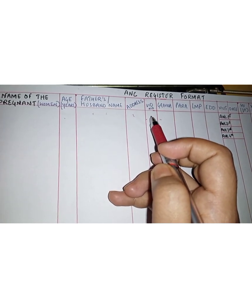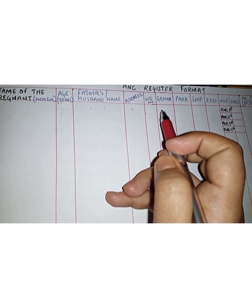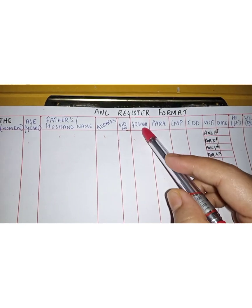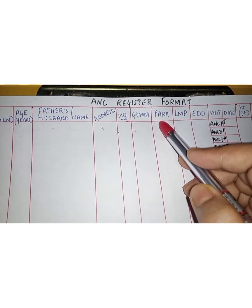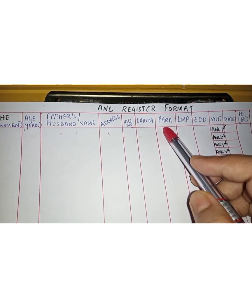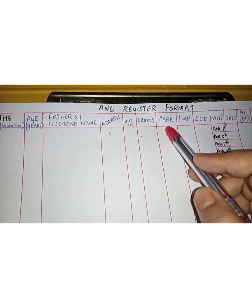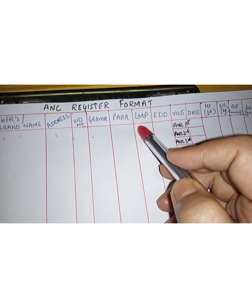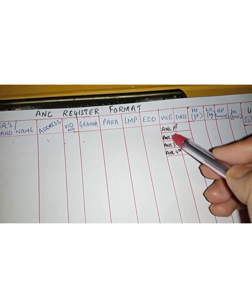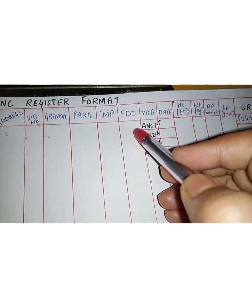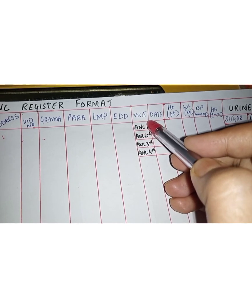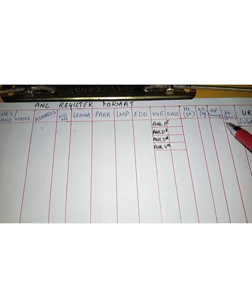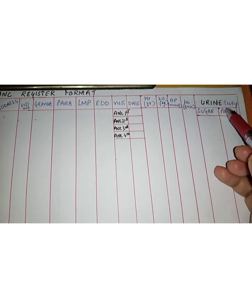We record the UID number, then gravida — which denotes the pregnant state, both present and past, irrespective of the period of gestation — then para, which denotes the state of previous pregnancy including the viability period of 20 weeks. We record the LMP (last menstrual period) and calculate the EDD (expected date of delivery). On the first visit, we register patient name, height, weight, blood pressure, hemoglobin, and urine testing for sugar and protein.